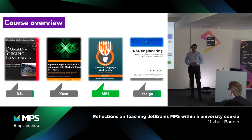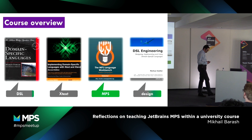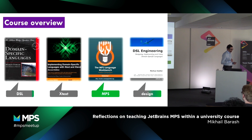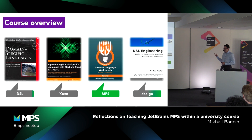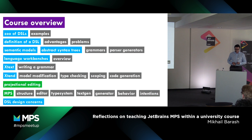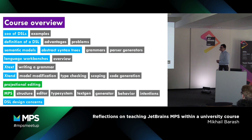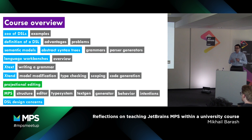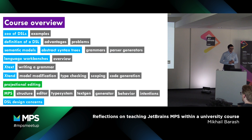The course consisted of four main parts. The first one was a theoretical introduction into domain-specific languages, then implementing DSLs with Xtext, then implementing them with MPS, and finally a couple of words about design concerns for domain-specific languages. I started with a zoo of domain-specific languages, gave 40 examples, then finally defined what a domain-specific language is, and couldn't avoid talking about semantic models, abstract syntax trees, parsing, and grammars.